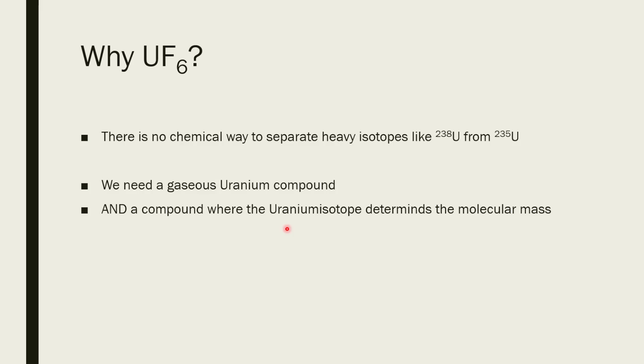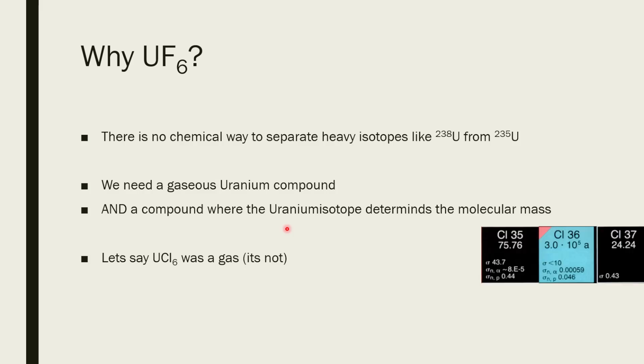And you would also need something where only the uranium isotope determines the molecular mass, therefore determining the mass of the whole gas. And uranium hexafluoride is just that. Because if you were to look at uranium hexachloride, let's say it is a gas, or it can be made into the gas phase. Not possible. But let's say it was possible. You have one problem. Because if you use uranium hexachloride, there is a 75% chance of having the chlorine-35 isotope. But there is also a 25% chance of it being the chlorine-37 isotope.